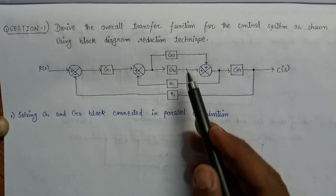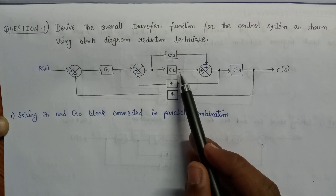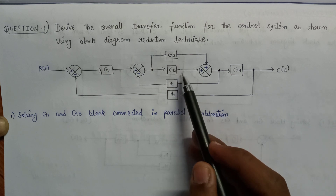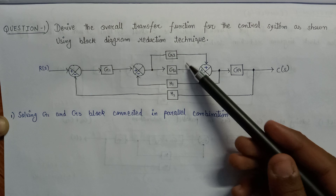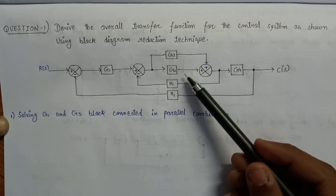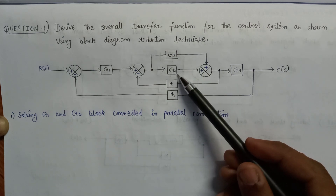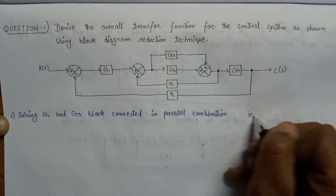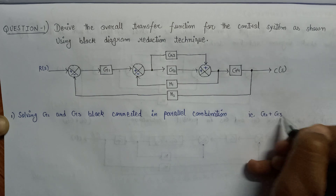Now let's calculate the equivalent forward path gain after evaluating G2 and G3 in parallel combination. Since G2 and G3 are in parallel combination, the overall gain would be nothing but the addition of G2 and G3, that is G2 plus G3.